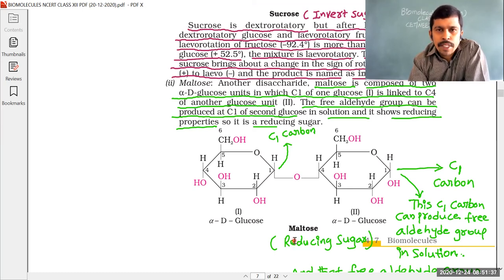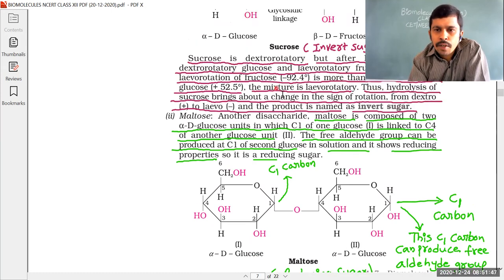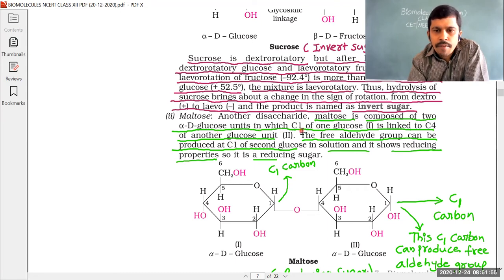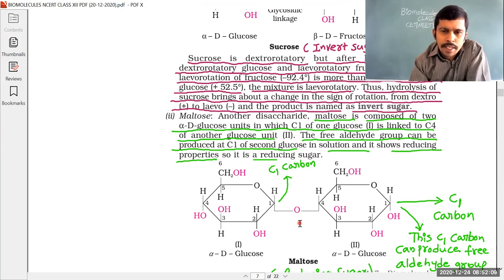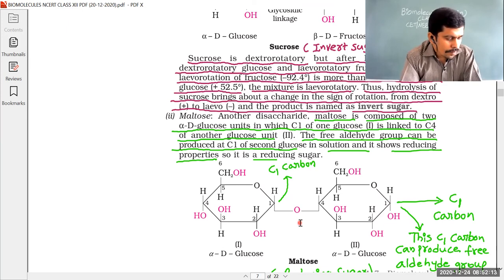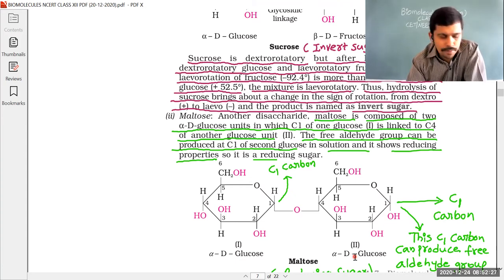When maltose undergoes hydrolysis it gives two alpha-D-glucose units only. So maltose is a disaccharide composed of two alpha-D-glucose units in which C1 of one glucose is linked to C4 of another glucose via a glycosidic linkage. For question 16, the answer is: alpha-D-glucose + alpha-D-glucose — option one.